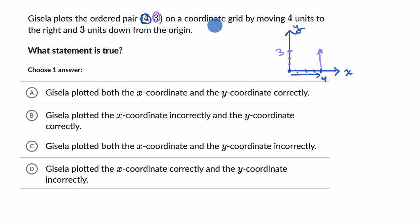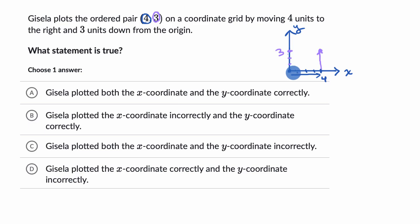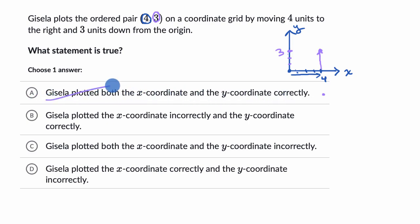Now it said that Gisela moved four units to the right — that's right — and three units down from the origin. So Gisela moved four to the right and then three units down, and that does not make sense. Choice A says Gisela did both of them correctly — that's not right.